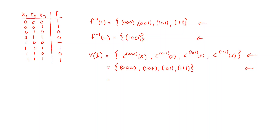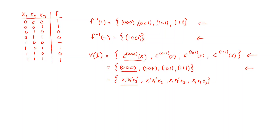We can also write these as our implicants: x1' x2' x3', x1' x2' x3, x1 x2' x3, and x1 x2 x3. The cube function written as an AND product of literals also corresponds to a minterm, because it is a vertex in our Boolean space.